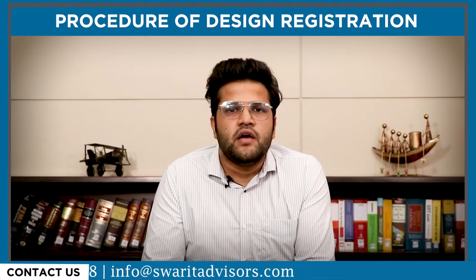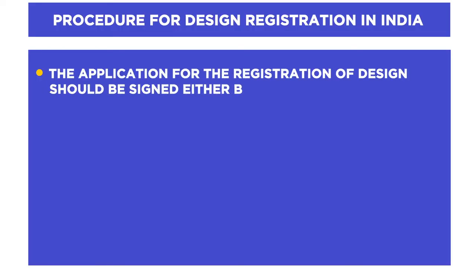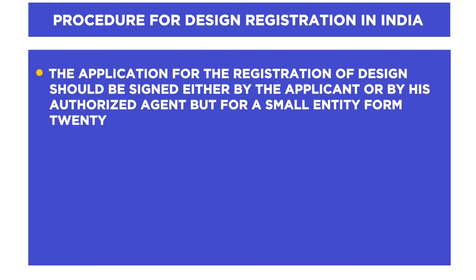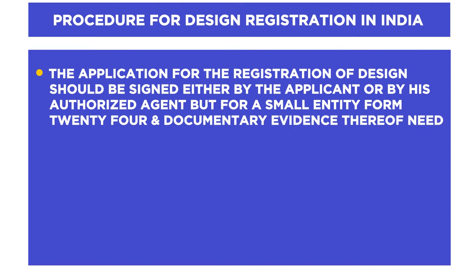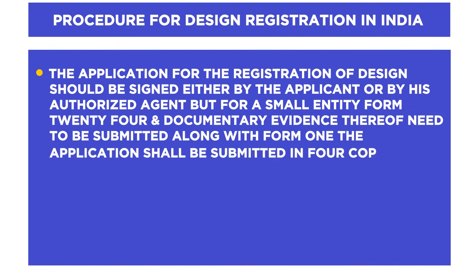Step 3: the application for the registration of design should be signed either by the applicant or by their authorized agent. For a small entity, Form 24 and documentary evidence thereof need to be submitted along with Form 1. The application shall be submitted in four copies.